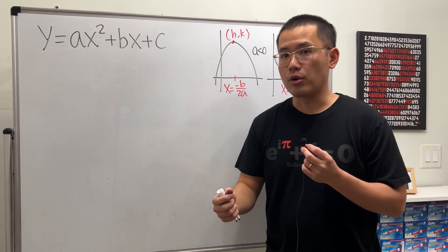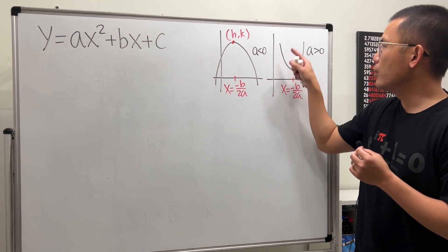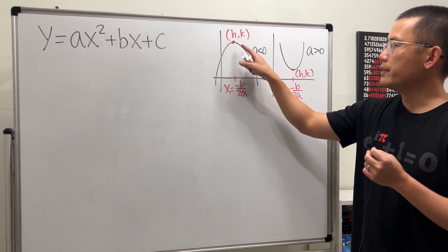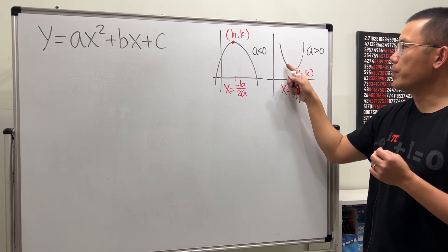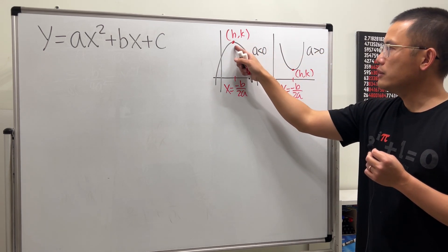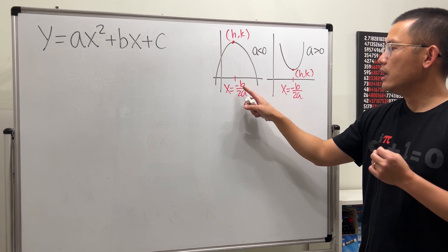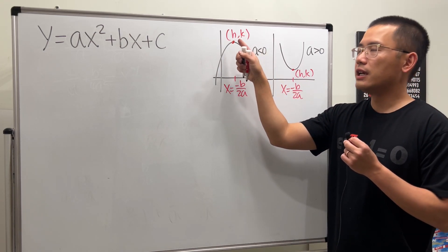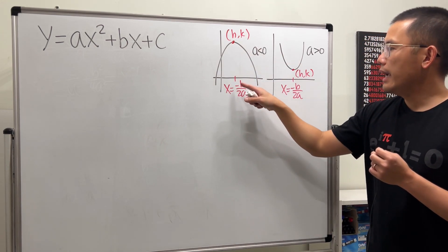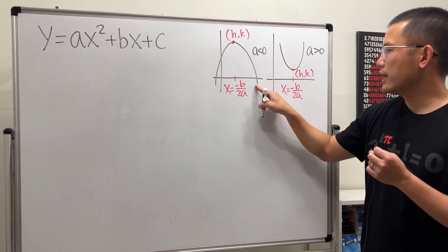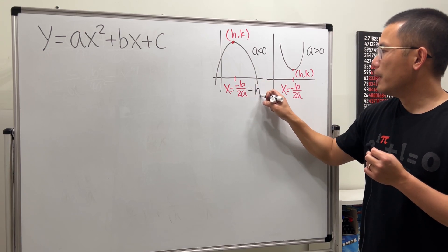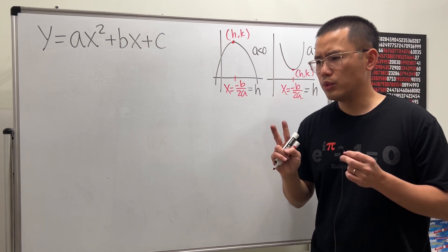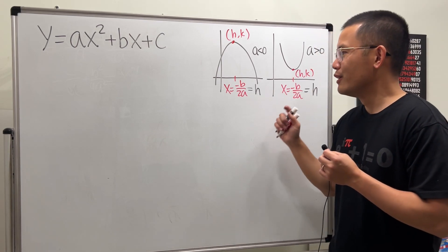The graph of it is going to be a parabola either open down or open up. We know if a is negative, then it will open down. If a is positive, it will open up. But in either case, the vertex is going to be at x equal to negative b over 2a. And since we usually label the vertex as h, k, and h is the x value, so you can look at this as h being equal to negative b over 2a.